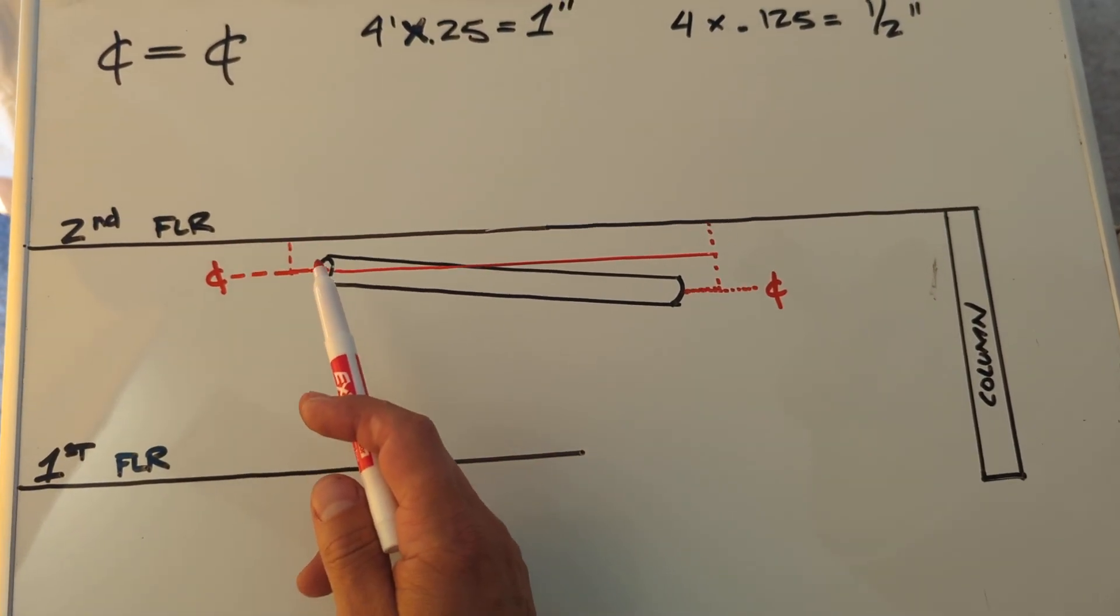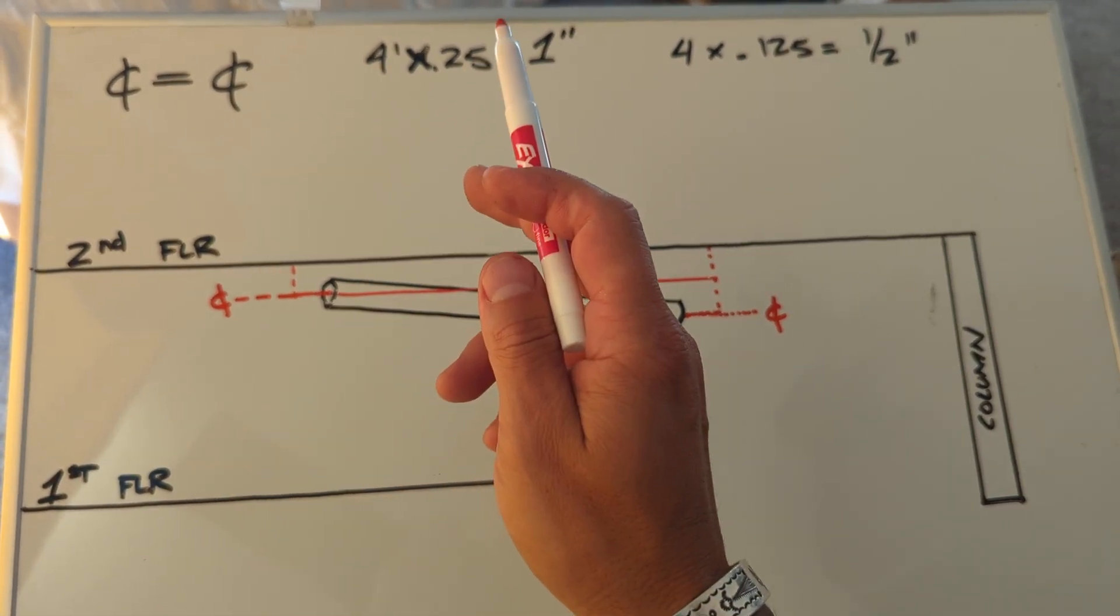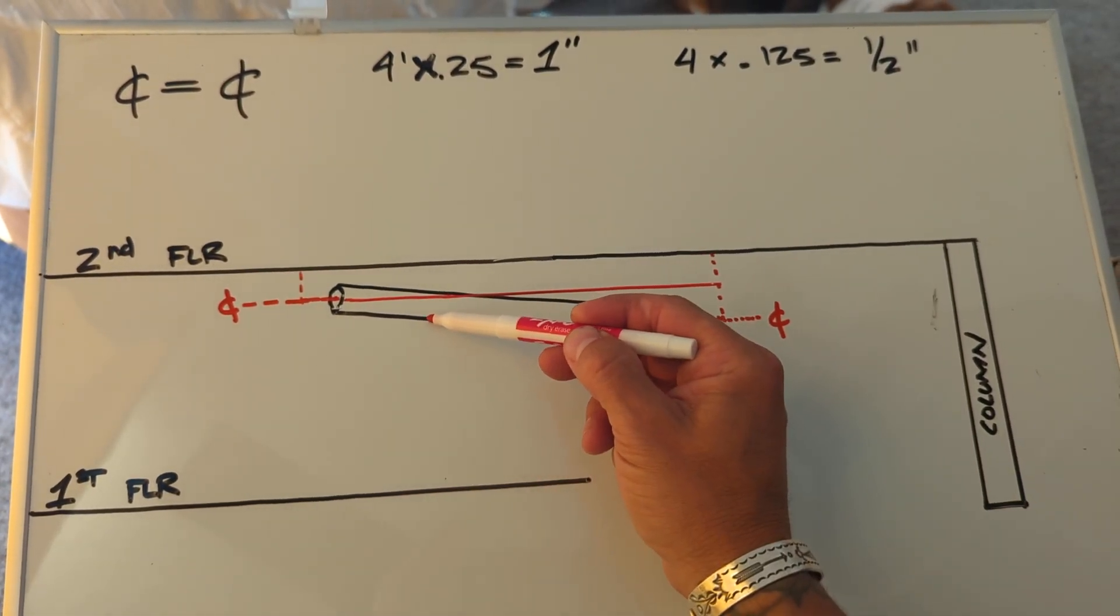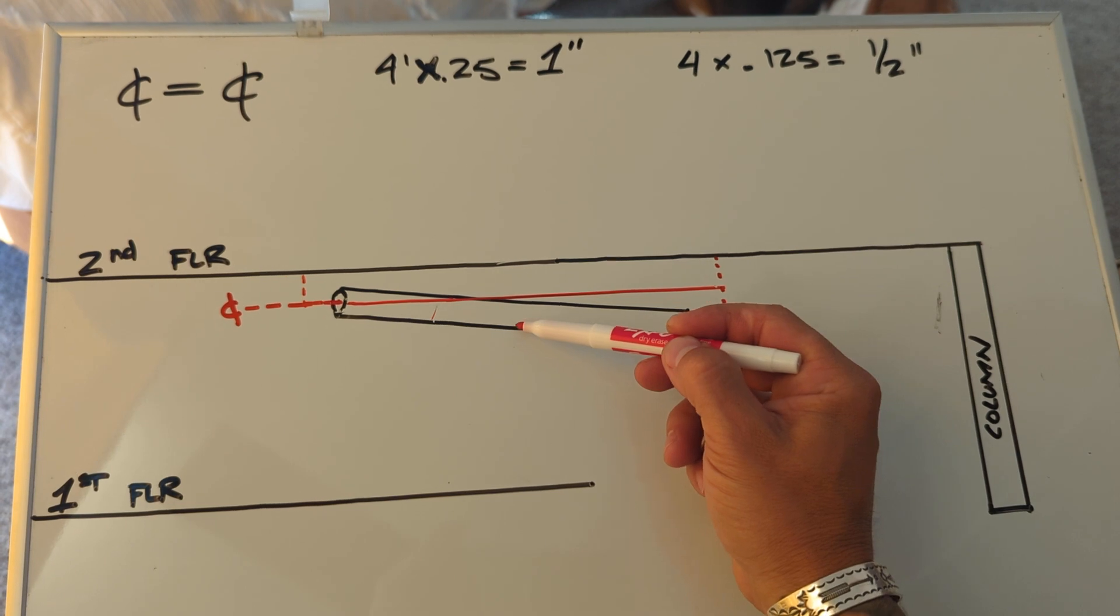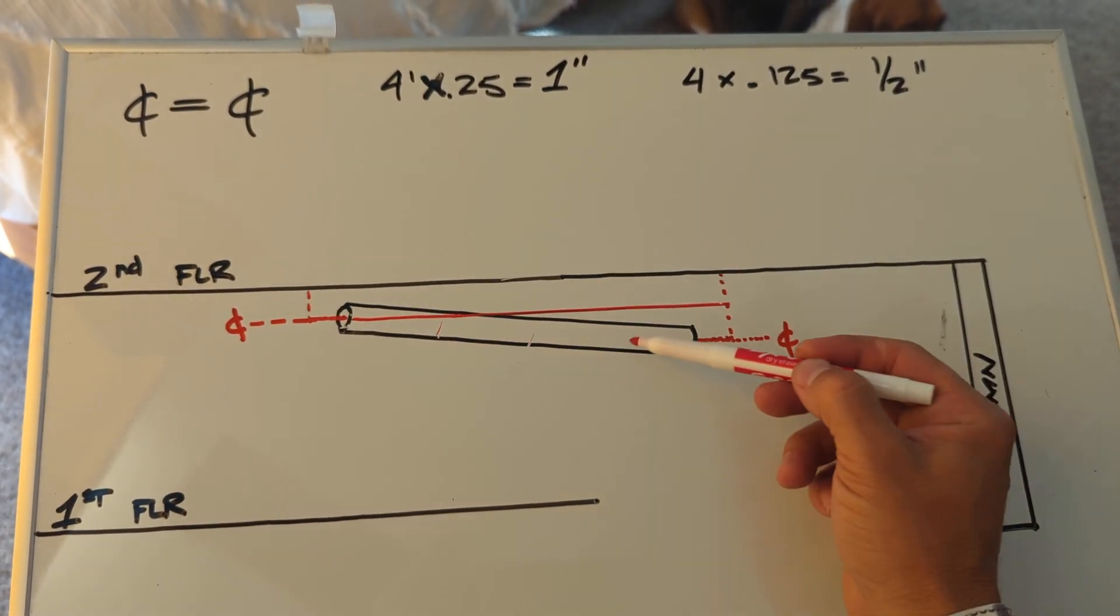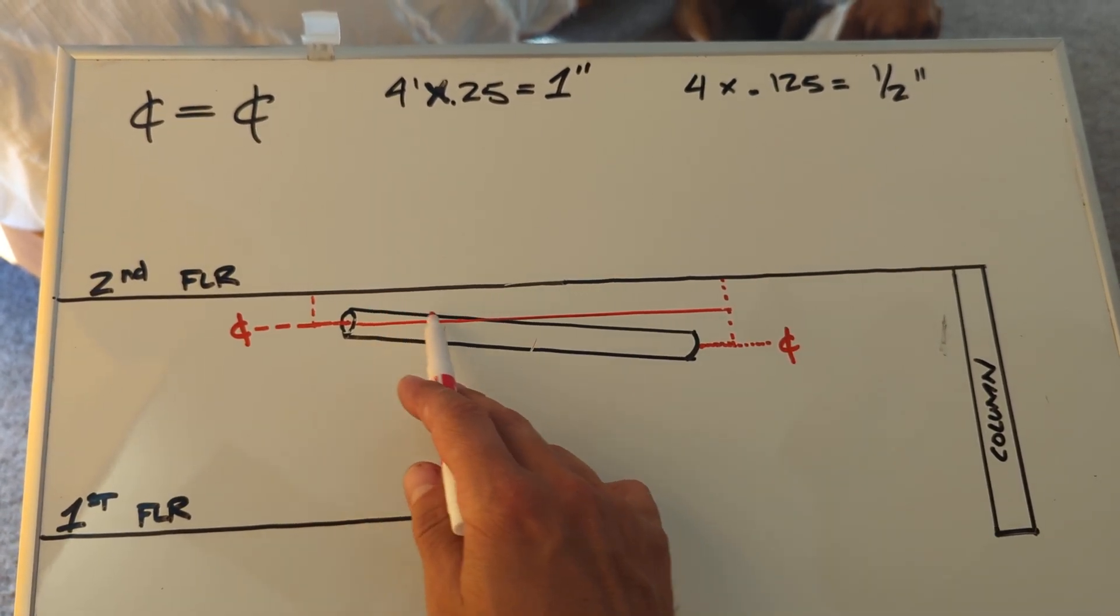So that's what grade means. 4 feet times 1 quarter inch per foot of this pipe. So if you've got to think, this is 4. Oops, I jacked that up. So every foot of this pipe needs to be falling at 1 quarter inch.